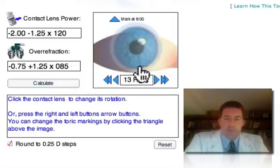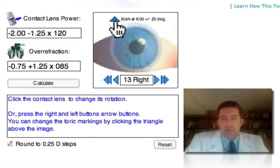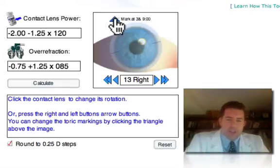If your toric lens didn't have a single marking like this, you can even change the markings to plus or minus 20 degrees, plus or minus 30 degrees, something more like the Siva lenses with the three markings, and other lenses sometimes have markings at 3 and 9 o'clock. This doesn't change the calculations. It just helps you try to select the lens that looks most like the one on your patient's eye.